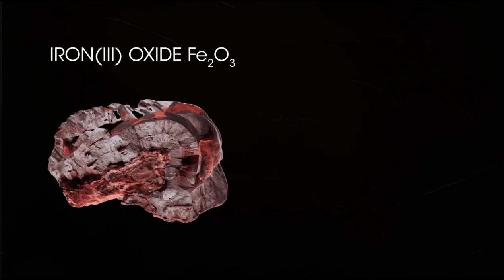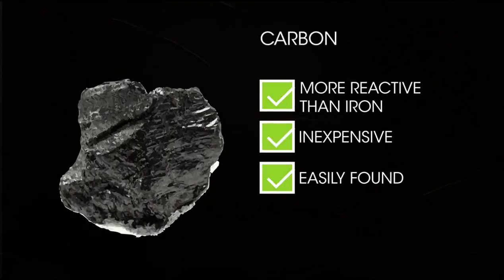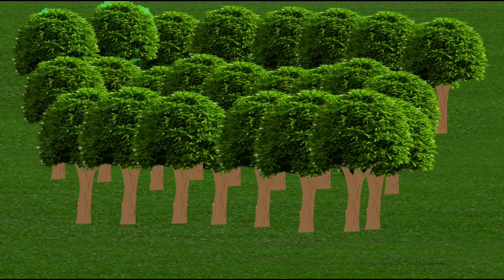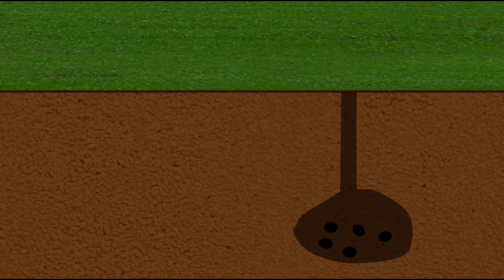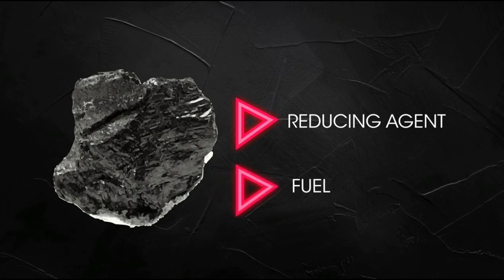To displace iron from its oxide, we need a material that is more reactive than iron, inexpensive and easily obtainable. Carbon ticks all of those boxes. Until the industrial revolution in the 18th century, the source of carbon had been charcoal, which contributed to deforestation in many parts of Europe. The discovery that coke, almost pure carbon, could be made from coal was a major breakthrough. Carbon acts both as a reducing agent, it can remove oxygen from a compound, and as a fuel to supply the high temperatures a furnace needs, over 1,500 degrees centigrade, to enable the reaction to proceed.